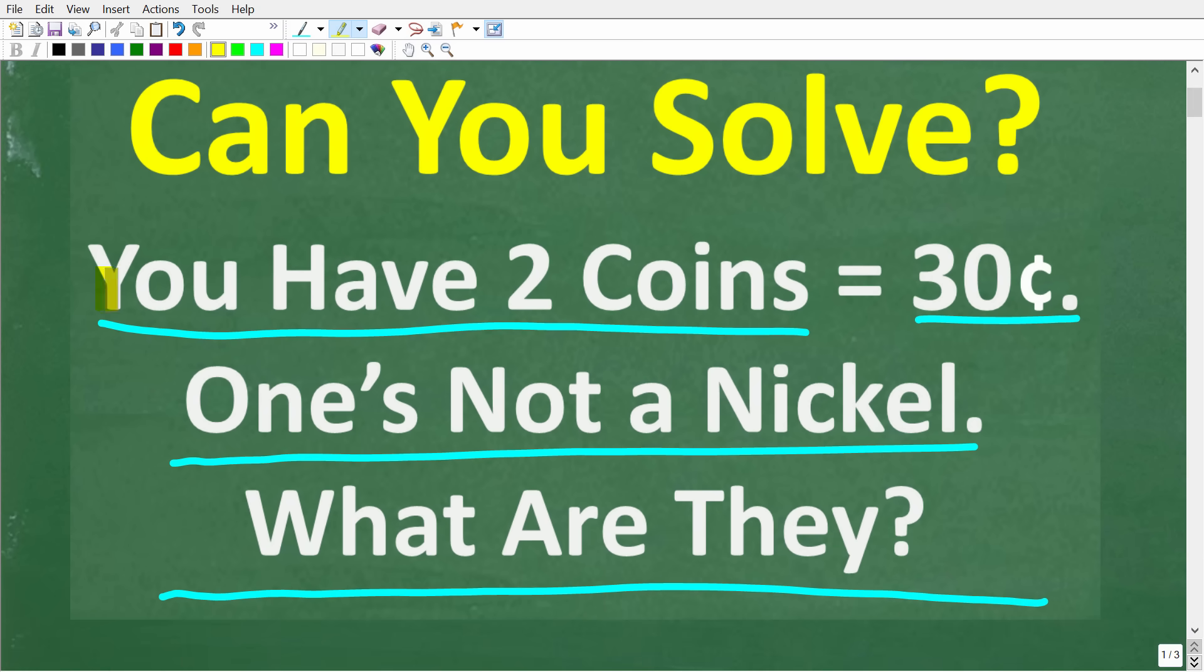Okay, so one more time: you have two coins and the value of these two coins add up to 30 cents. One is not a nickel. What are these coins?